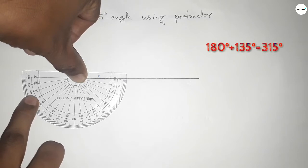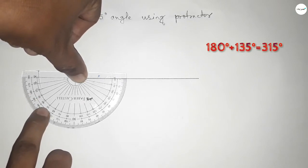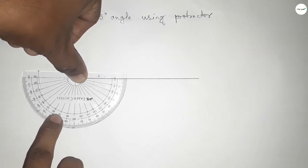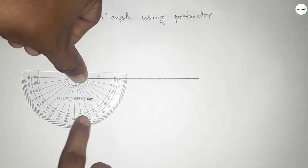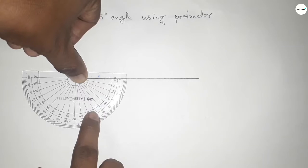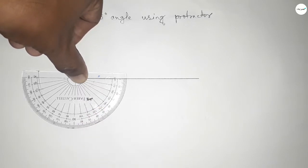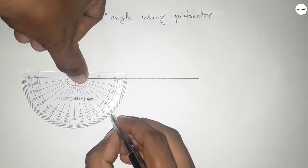20, 30, 40, 50, 60, 70, 80, 90, 100, 110, 120, 130, and this is 135 degrees. So if you add